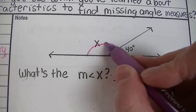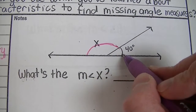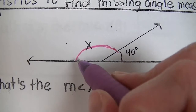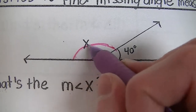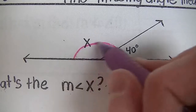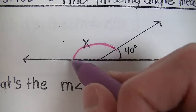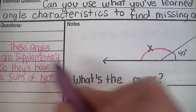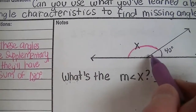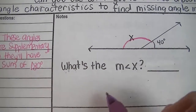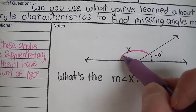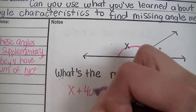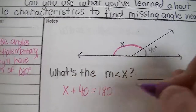Knowing that this angle plus this angle needs to be 180 — a helpful hint is that when you draw each arc in and connect them, you'll see that it forms a half circle, and there are 180 degrees in a half circle. That helps you remember these are supplementary angles. So when you add angle X plus this 40-degree angle, they'll have a sum of 180 degrees.